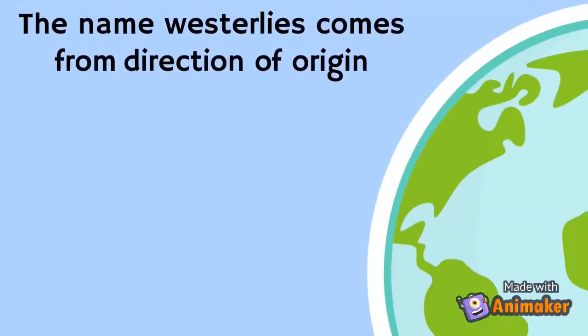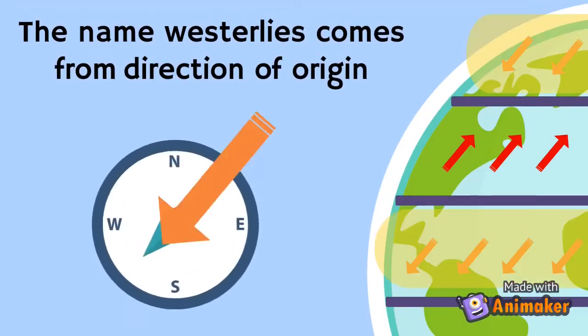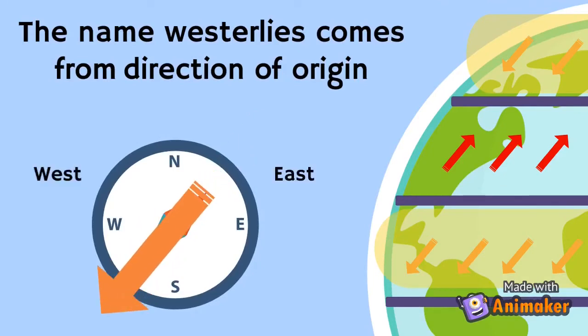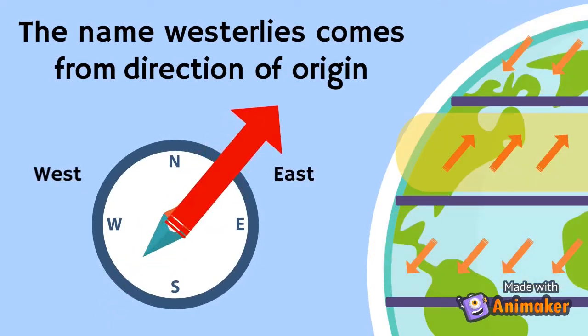The name Westerlies comes from the direction of their origin. While trade winds and polar Easterlies blow from east to west, Westerlies blow from west to east.